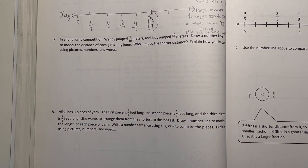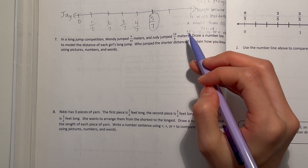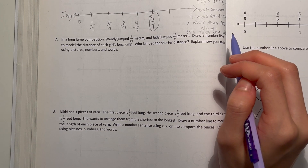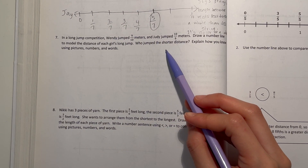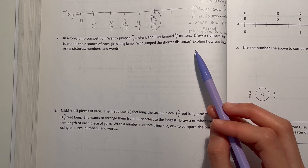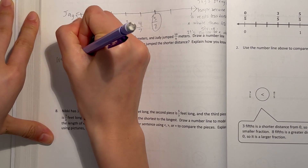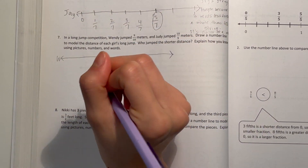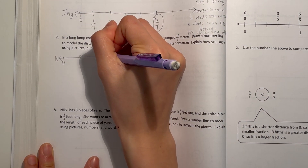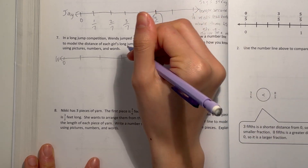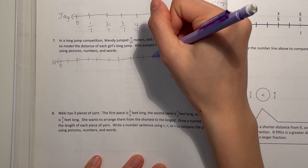Number seven. In a long jump competition, Wendy jumped nine-tenths meters and Judy jumped ten-ninths meters. Draw a number line to model the distance of each girl's long jump and explain who jumped the shorter distance. For Wendy, nine-tenths — we're going to split this into tenths. Nine-tenths would be right here.